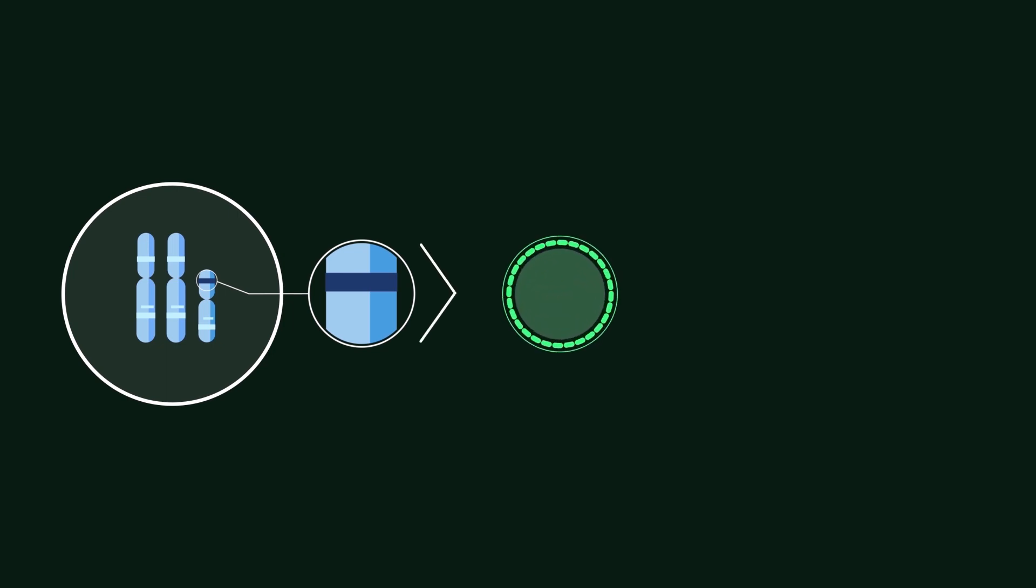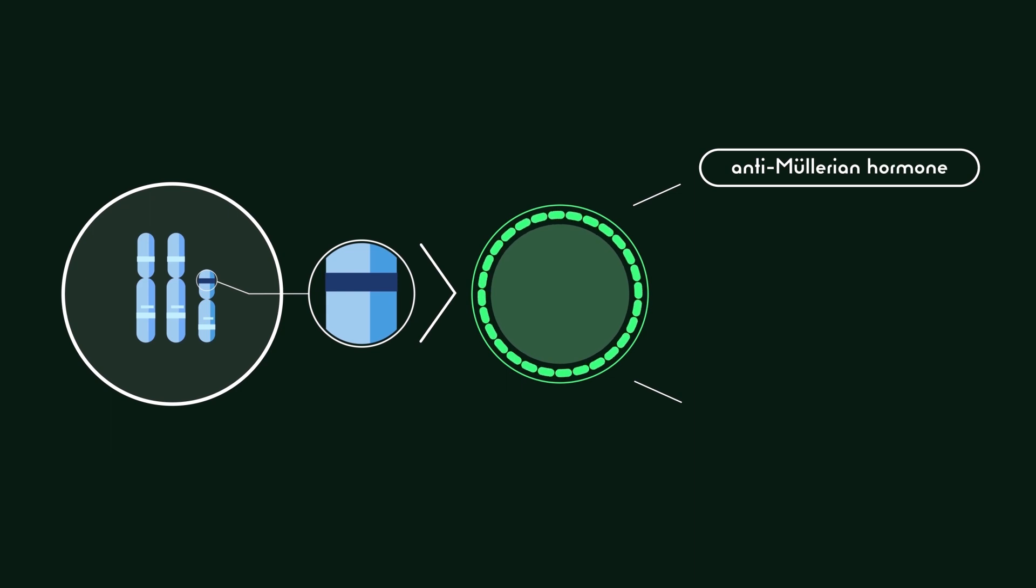Around the eighth week after conception, the 47XXY fetus undergoes gonadal differentiation. The activation of the SRY gene on the Y chromosome causes the bipotential gonads to form into testes. As the gonads differentiate into testes, they produce two hormones: anti-Müllerian hormone (AMH) and the androgen known as testosterone.